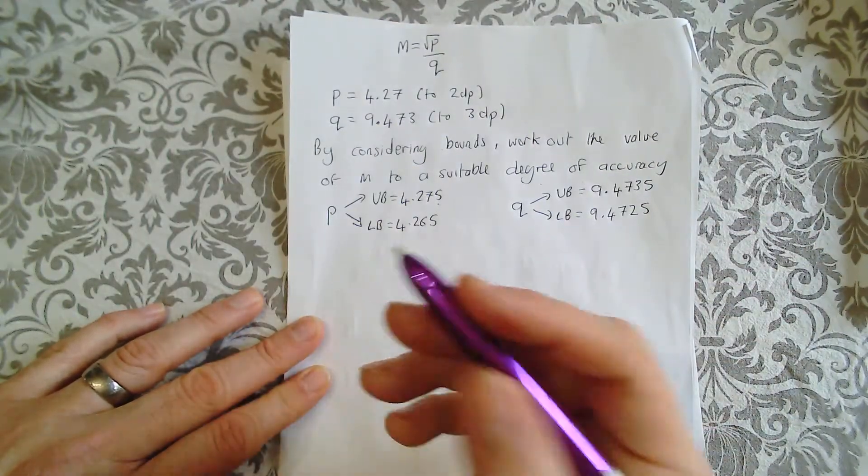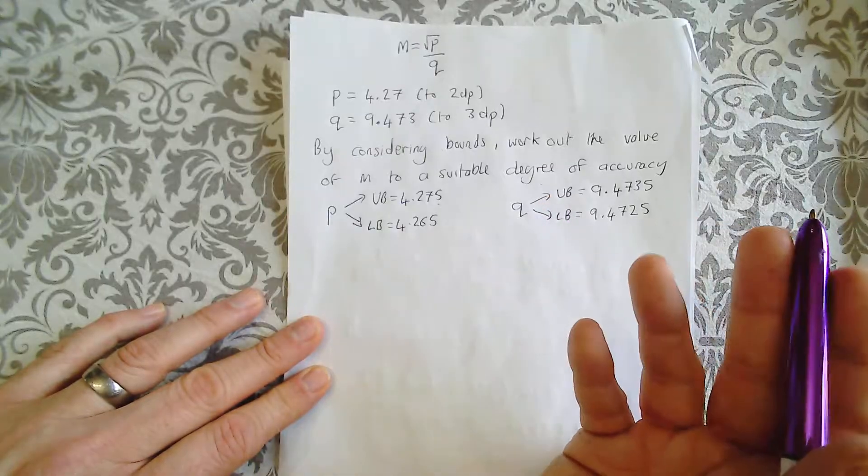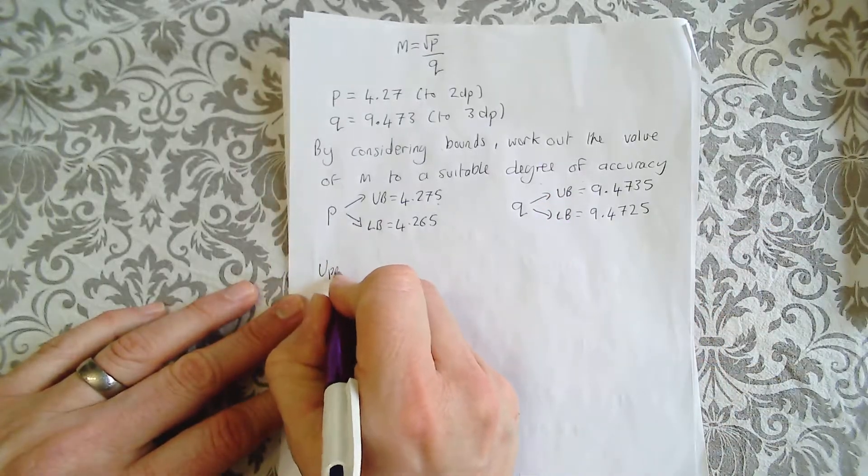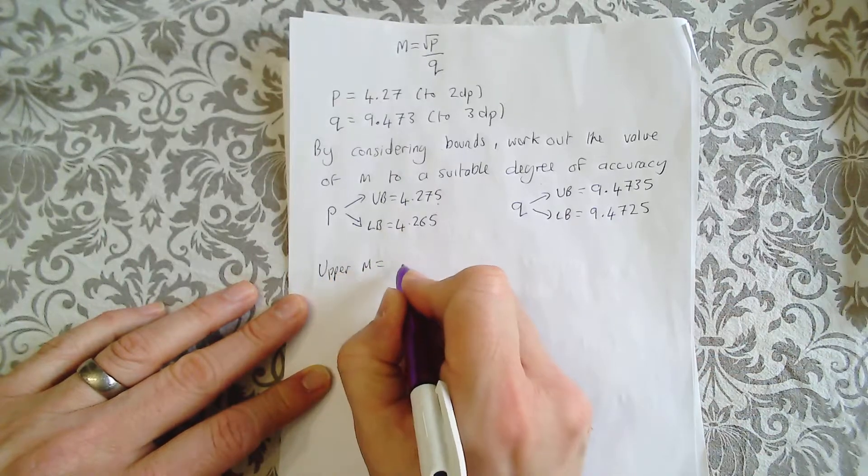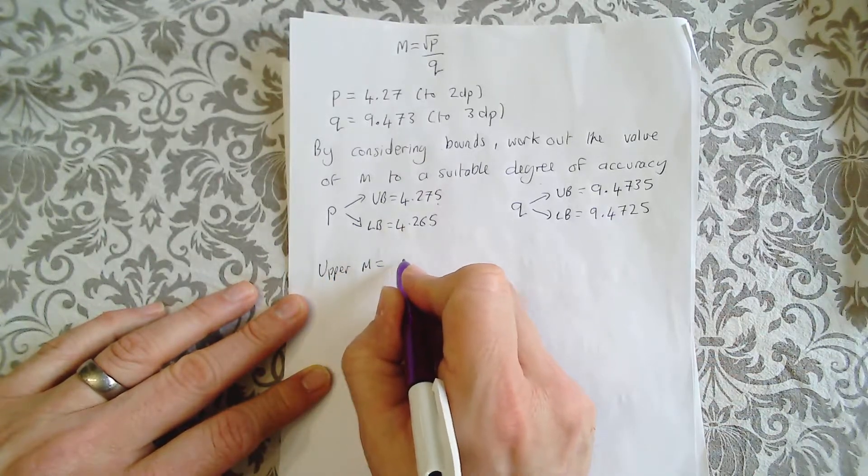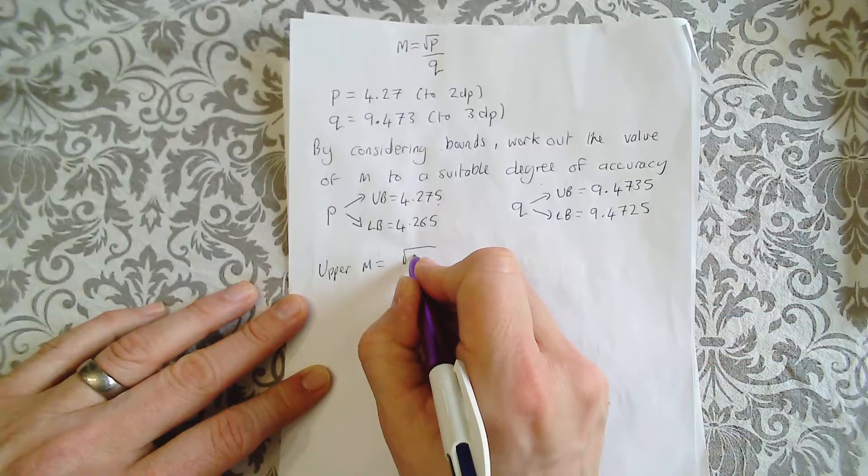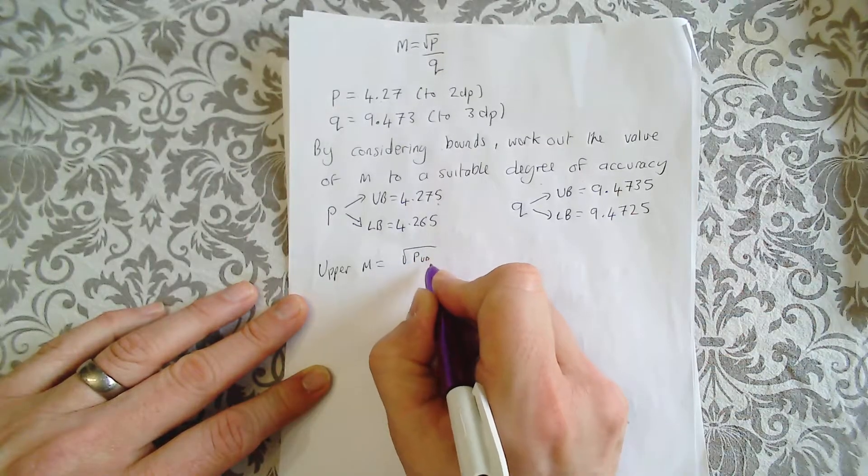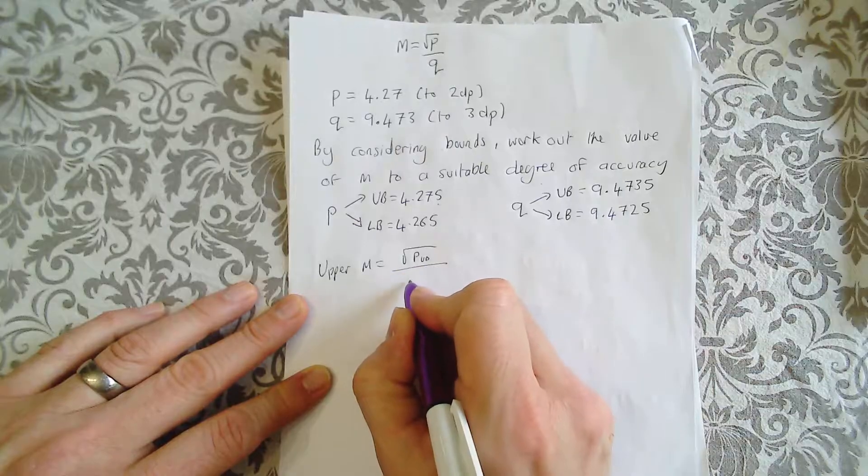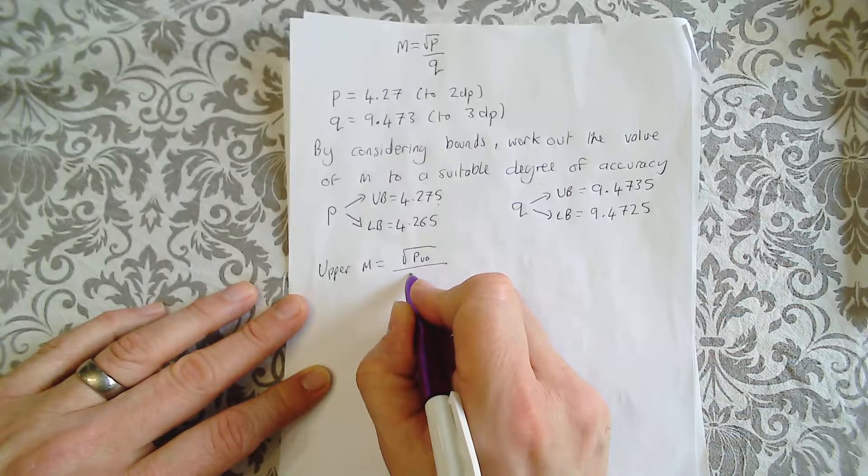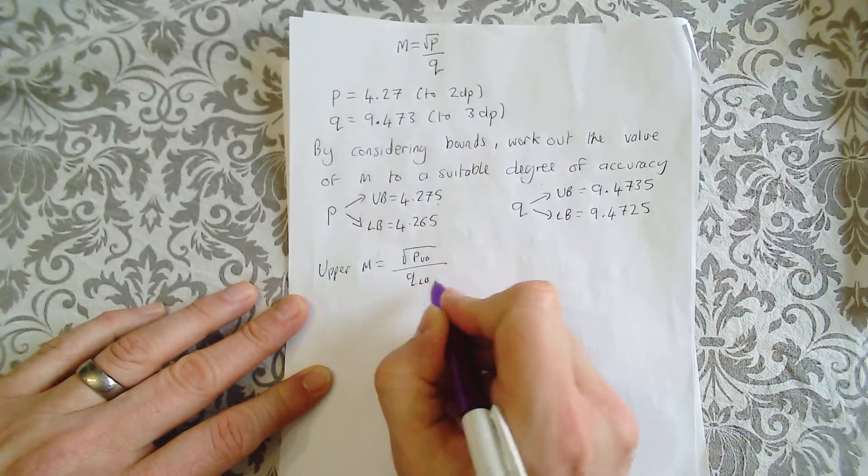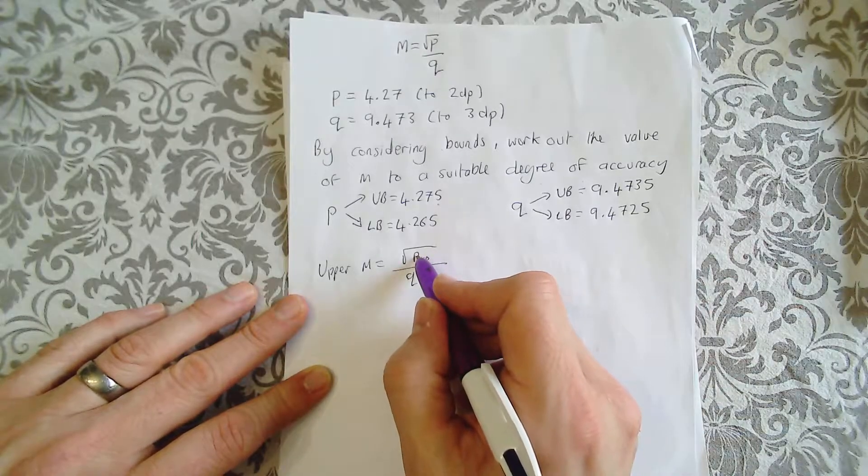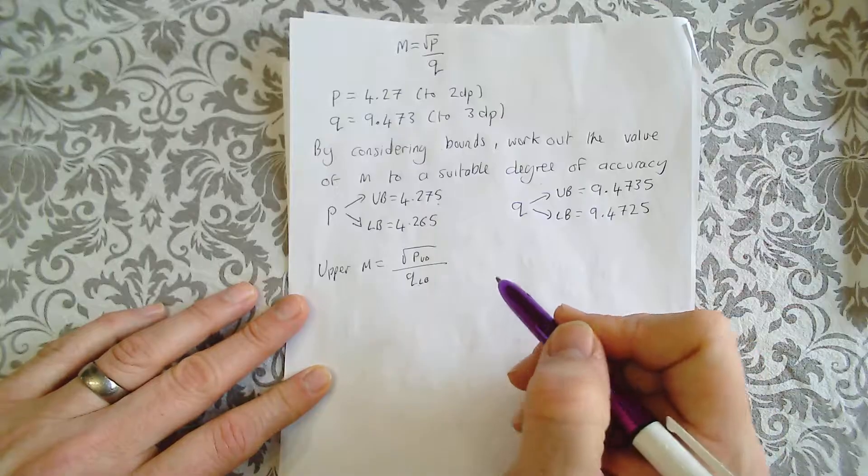Now we're going to find an upper bound and a lower bound for M. So the upper M is the square root of P upper bound divided by the Q lower bound. Because what I need is a big number on top and a small number on the bottom to make a bigger number.